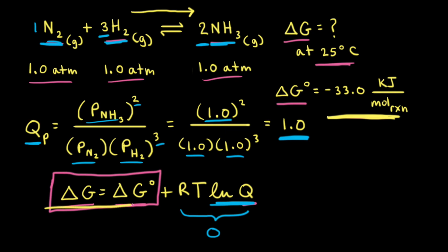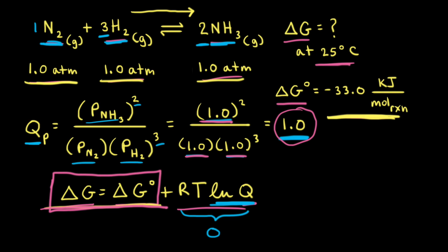The reason delta G equals delta G naught at this moment in time is because the reactants and products are all in their standard states. By convention for a gas, standard state refers to the pure gas at a pressure of one atmosphere. Since all of the partial pressures are equal to one atmosphere, that gave us Q equal to one, which made the second term equal to zero. So only when the substances are in their standard states is delta G equal to delta G naught.